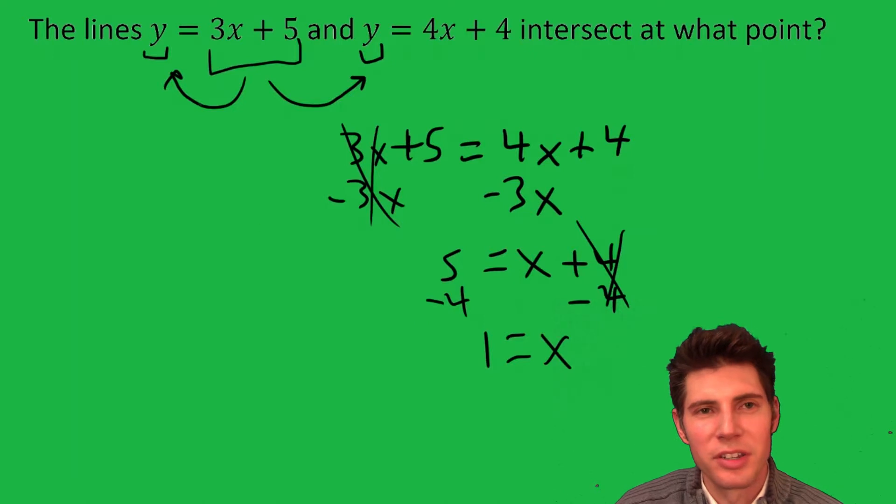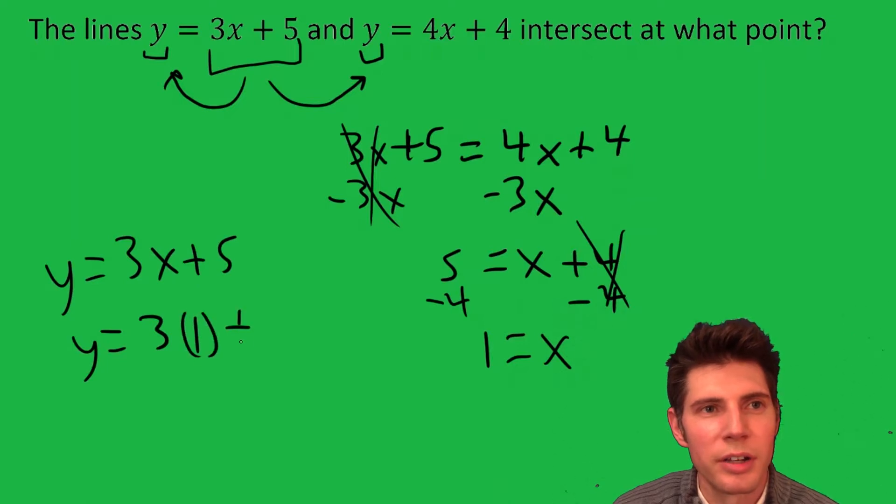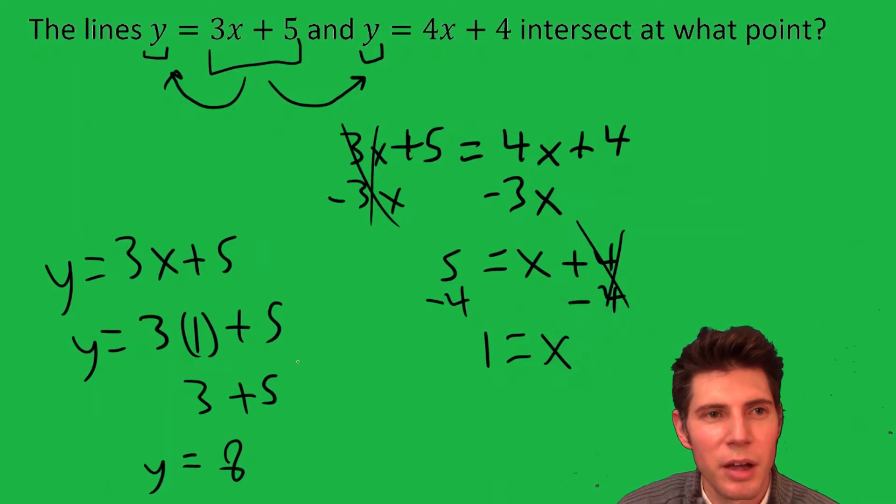In order to find y, we can just plug this x into either of the equations. I'll just choose the first one here. y equals 3x plus 5. Now you can plug a 1 in for the x. You get y equals 3 times 1 plus 5. 3 times 1 is 3. So 3 plus 5 is 8. So we now have our y.